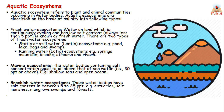Aquatic ecosystems are classified on the basis of salt content. The first type is freshwater. In the freshwater ecosystem, the amount of salt is very low — less than five parts per thousand. So the salt content in freshwater is less than 5 ppt.